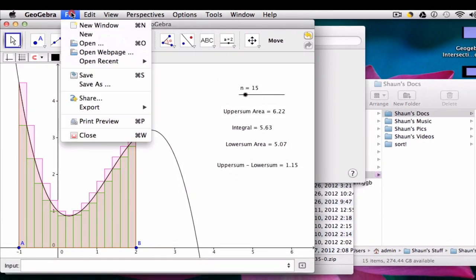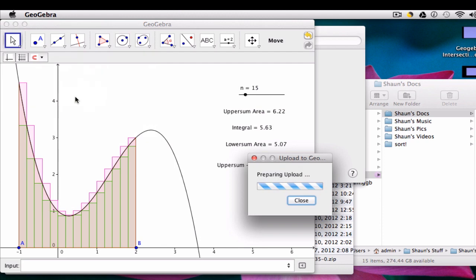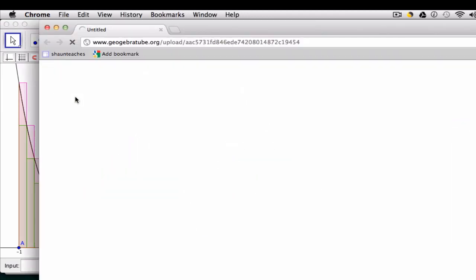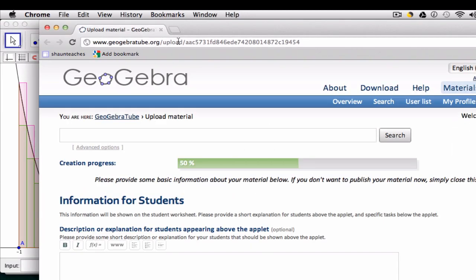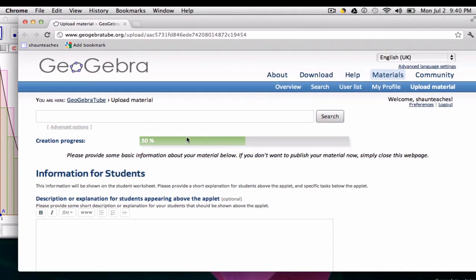Once you have it ready, you click File and Share, and then go to GeoGebraTube. And it goes up here to 50% and stops.